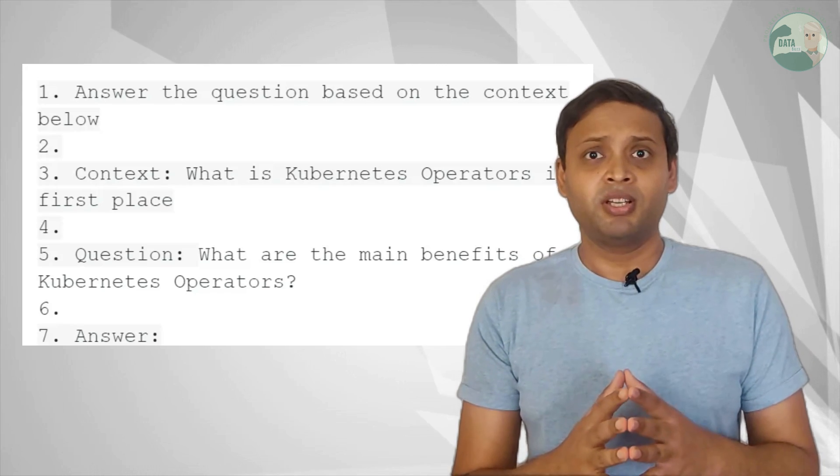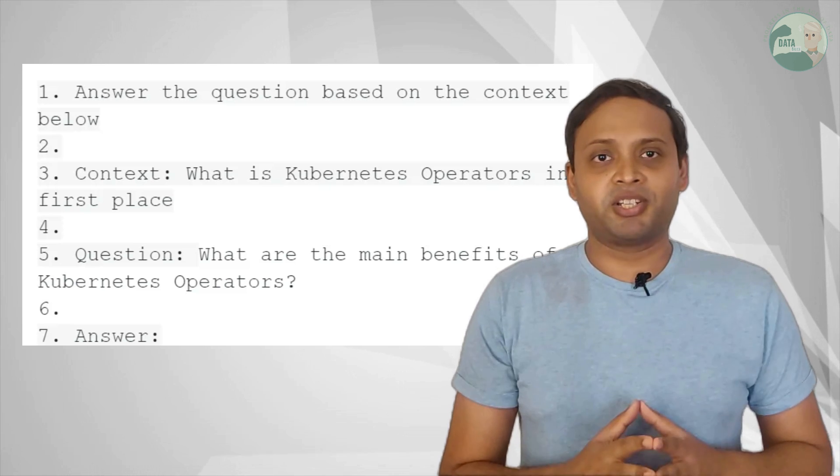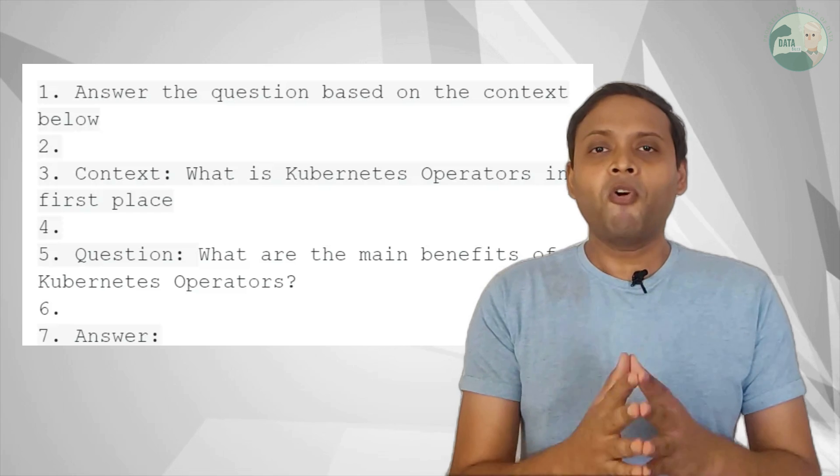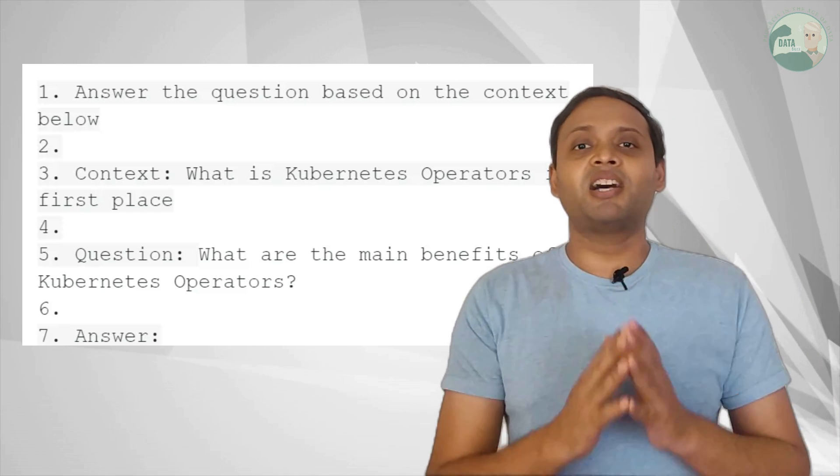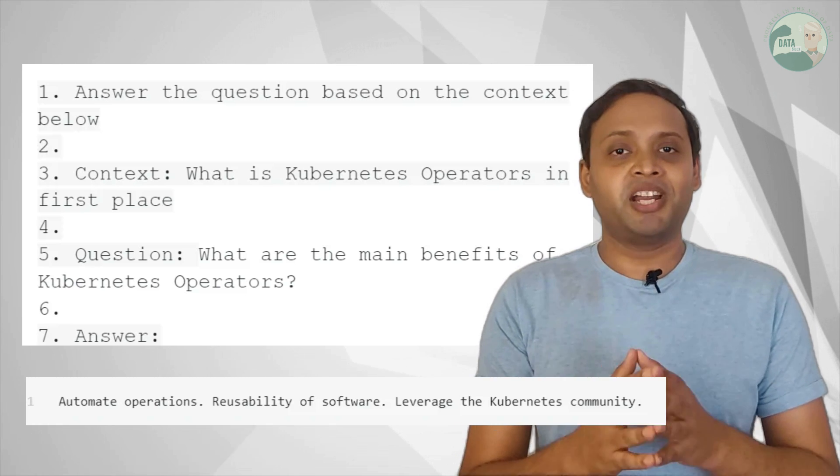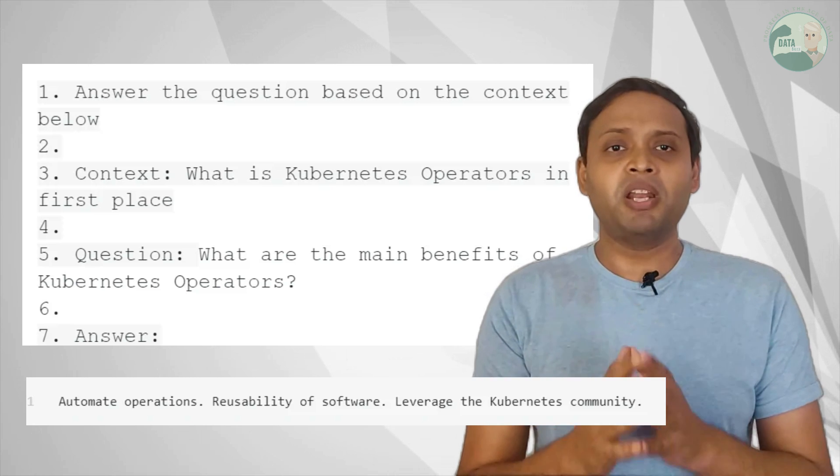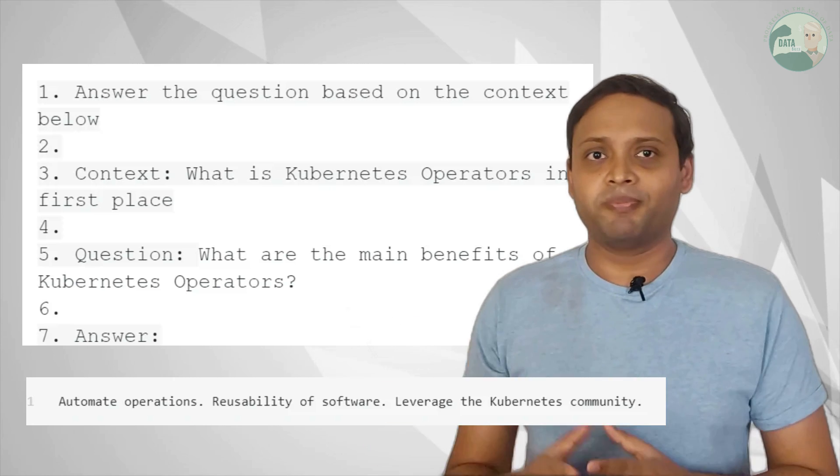Now what I did, I asked the same question again but with a bit of prompt engineering where I set up a bit of instructions. That is, I set the model to answer the question based on the context. And I set up the context by saying, what is Kubernetes operators in the first place? And then asked the same question. And now look, I have the corrected answer. That is, its benefits are either operation automations or reusability or etc.